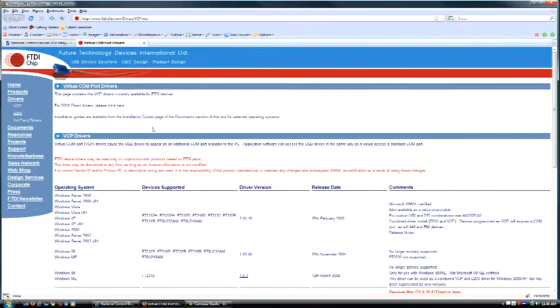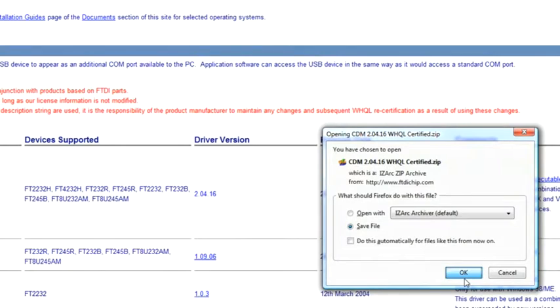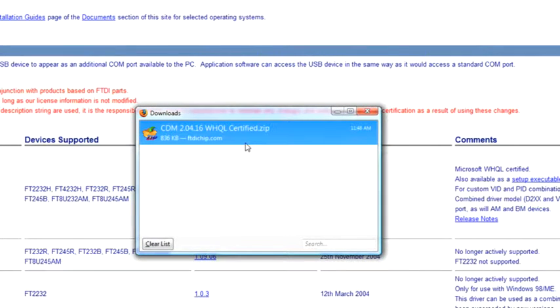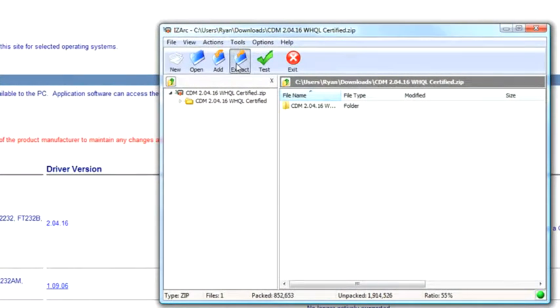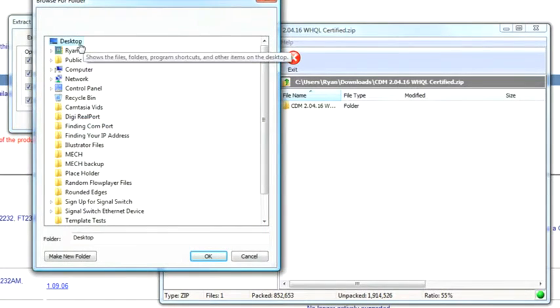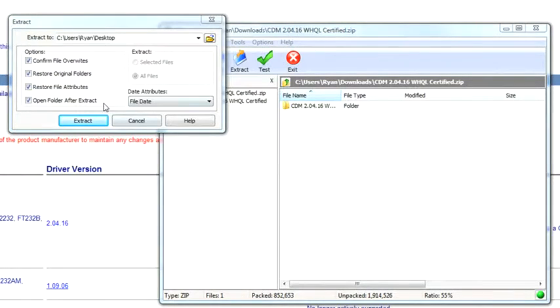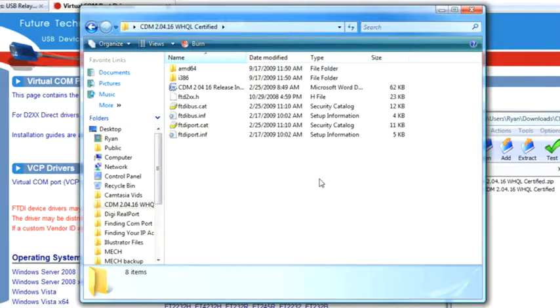This will redirect you to FTDI chip, and from here you'll want to download the latest driver version for your operating system. I'm using Windows XP, so I can use this one. You'll want to save file. Once the file's completed downloading, you'll want to open it and extract. I'm just going to extract mine to the desktop. You can extract yours to wherever you want. Select OK and extract. And then you'll want to navigate to that folder. And here's where your drivers will be at.